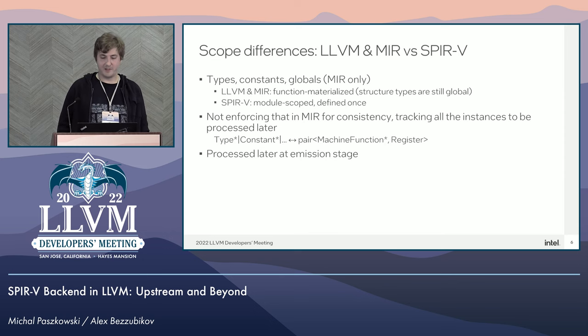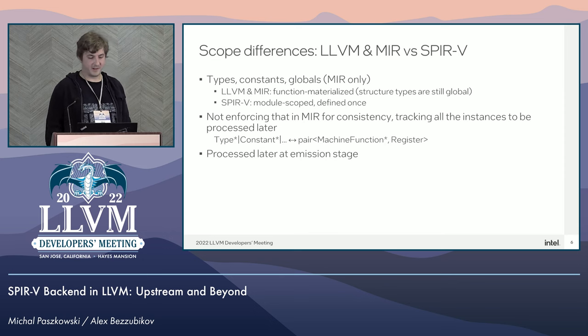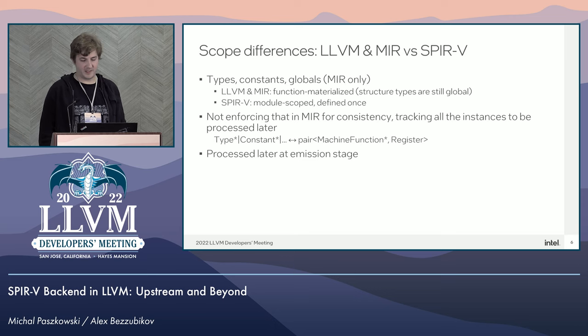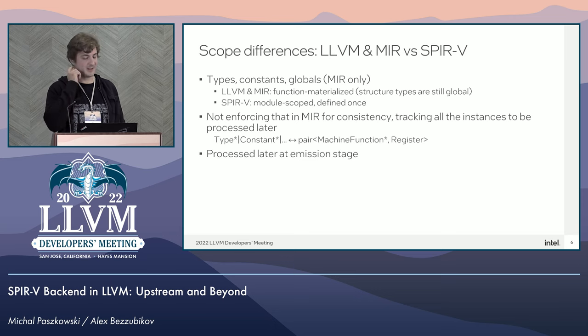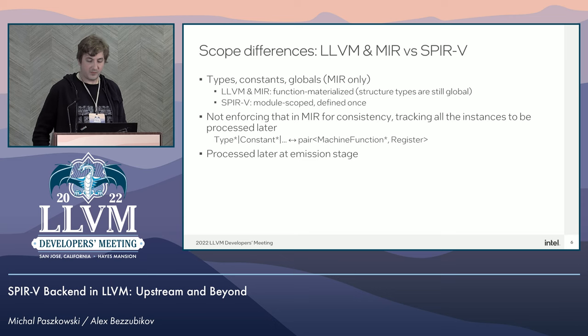One part of the aforementioned semantic gap is the scope differences. In SPIR-V, types, constants, globals, and other entities are uniquely defined in a single module section and are used across all the functions. On the contrary, constants and standard LLVM types are not even explicitly defined in LLVM IR with a specific instruction — they're not materialized there.